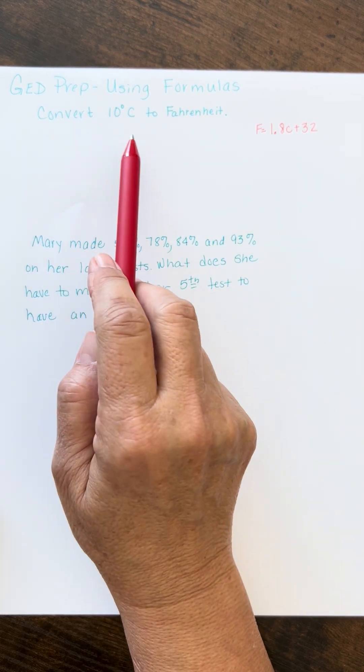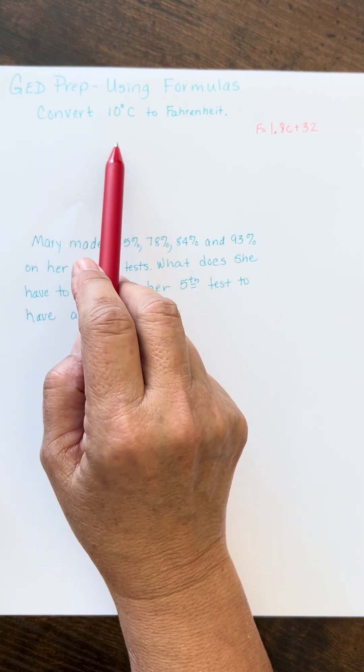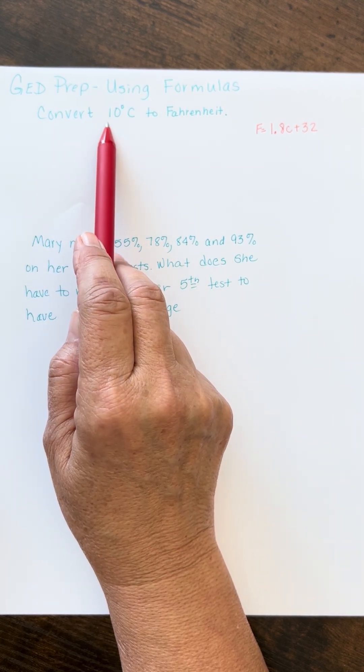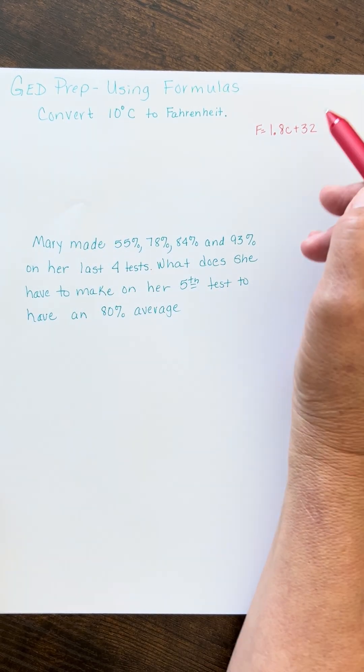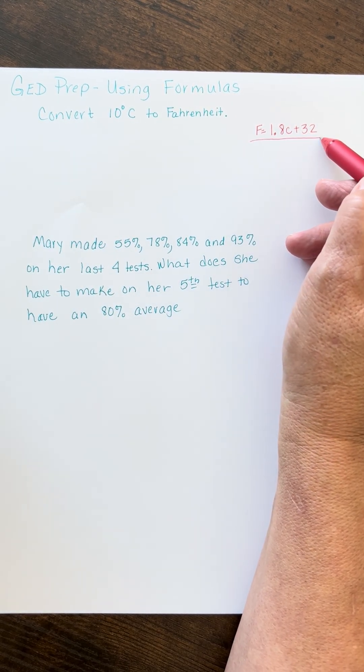Now, on the GED, there would have been a whole scenario about this, but I'm just going to cut to the chase. If you want to convert 10 degrees Celsius to Fahrenheit, they're going to give you the formula, and this is what the formula looks like.